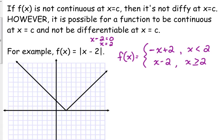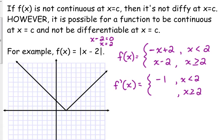If we're talking about the derivative of this absolute value function, we can take the derivative of piecewise functions by taking the derivative of each piece. The derivative of the first piece — negative x plus two — is just negative one. So when x is less than two, our derivative is negative one. When it's greater than or equal to two, our derivative is positive one.